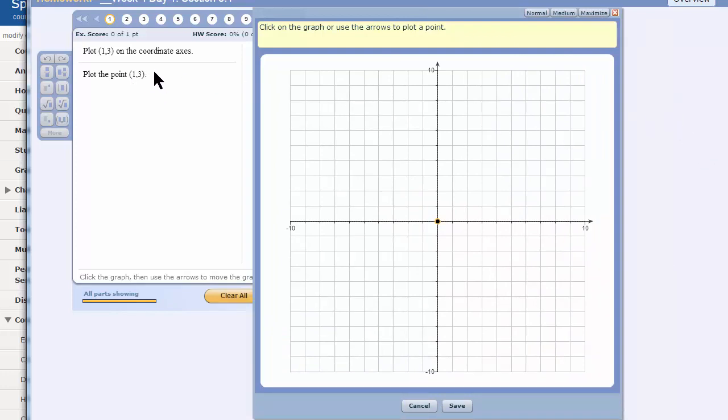Here is the point that I am going to plot. It's got a 1 and a 3. The 1 lines up with the horizontal axis here, which is called the x-axis. And the 3 lines up with the vertical axis, which is called the y-axis. So the point (1,3), if you start at the center, will be 1 to the right, and then 3 up.